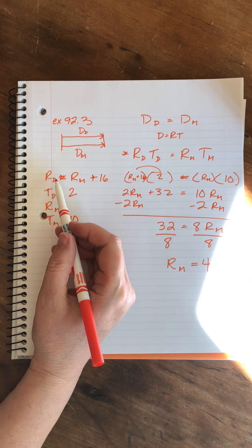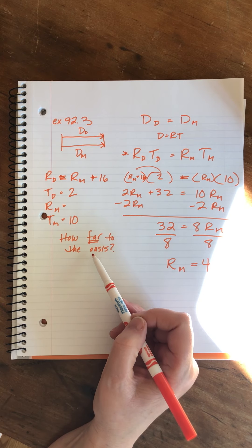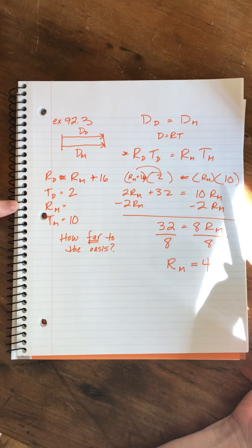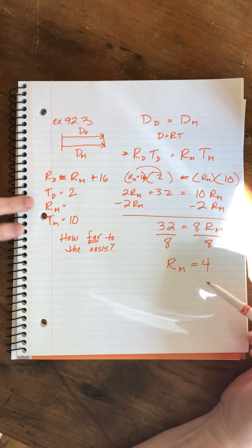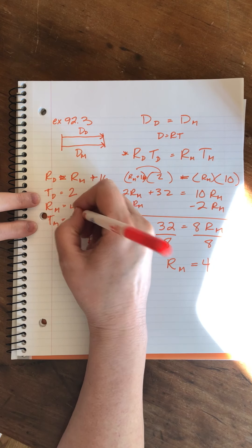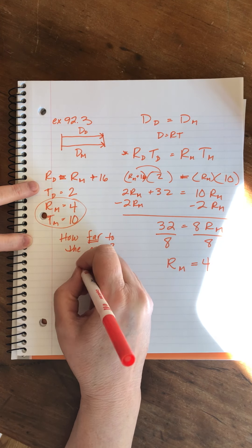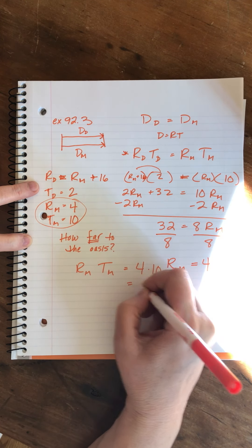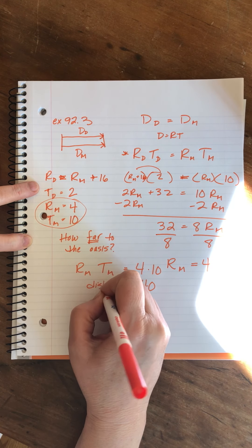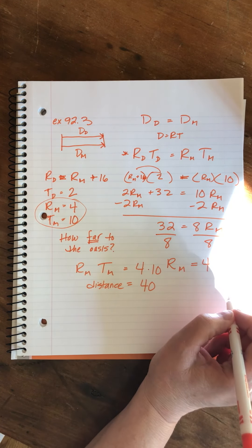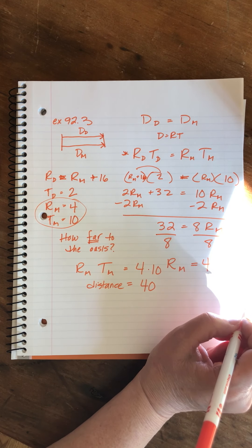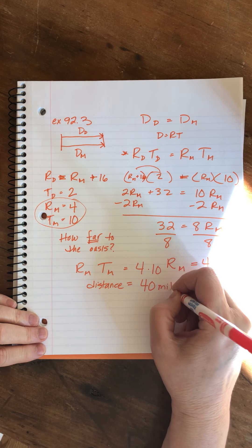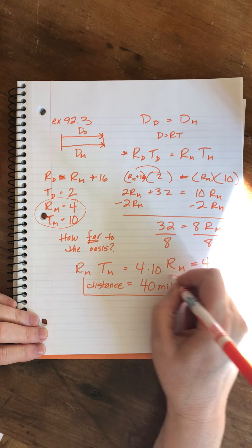Now we haven't calculated the rate of, what's the other guy's name? Durant. But we don't really need it. We need the distance. And we know that we can calculate the distance using either guy's information. Because they both have the same distance. So, we found the rate of Madele, so we can just take his data. The rate of Madele times the time of Madele equals 4 times 10, which equals 40. So, the distance to the oasis is 40 miles. I'm looking at the problem. Yeah, it's miles. Yay. That's a long way to walk.